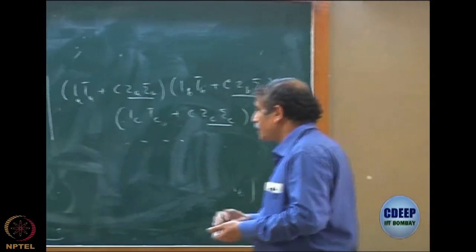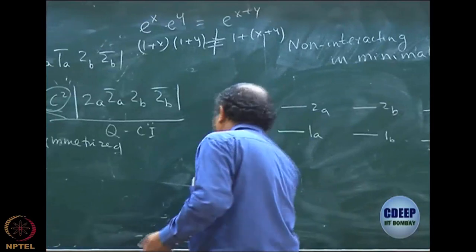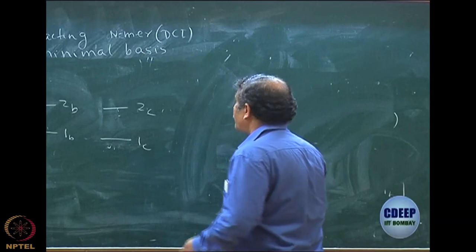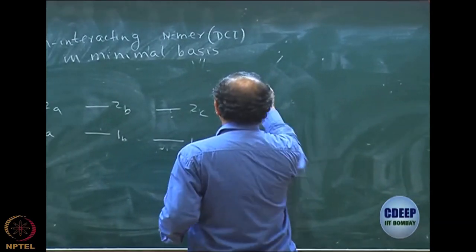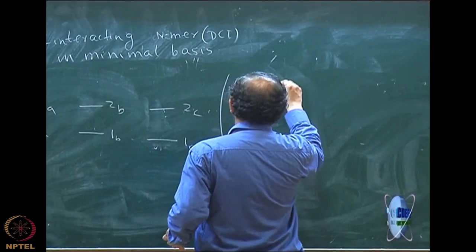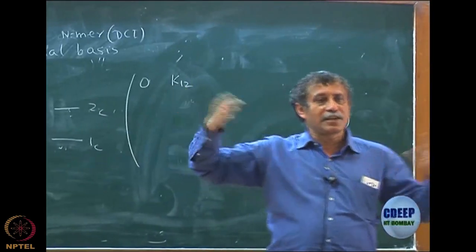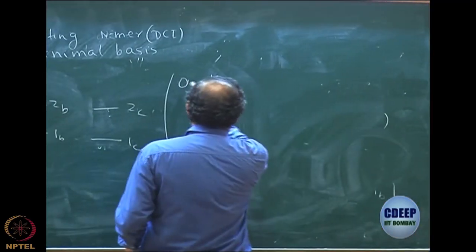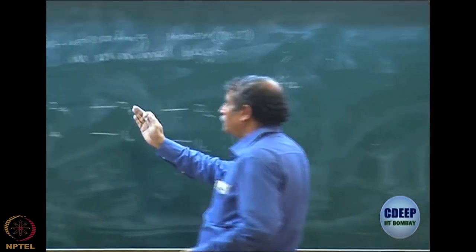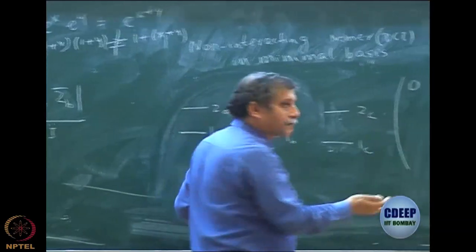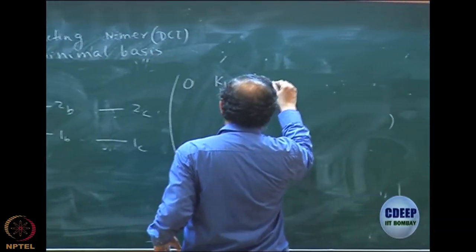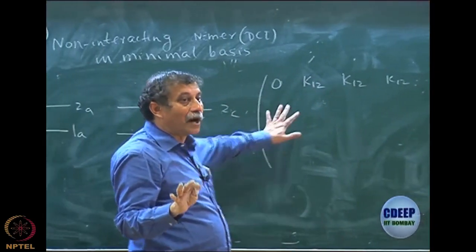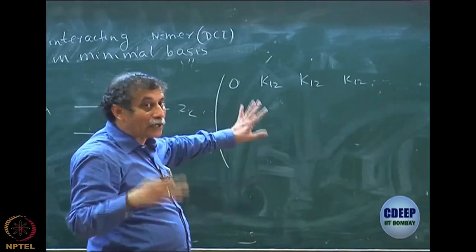What we actually get is what I want to describe as the correlation energy. If you set up the matrix, the matrix would look pretty much the same as the matrix we had. The Hartree-Fock to doubly excited element will still be K12, just like the monomer — K12. So all Hartree-Fock to all doubles will become K12. I am now doing doubly excited CI for the n-mer, so I do not have anything else.